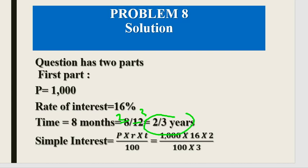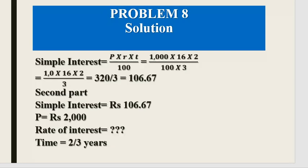Calculating: SI = (1,000 × 16 × 2) / (100 × 3) = 32,000 / 300 = Rs. 106.67. So the simple interest for 8 months is Rs. 106.67.